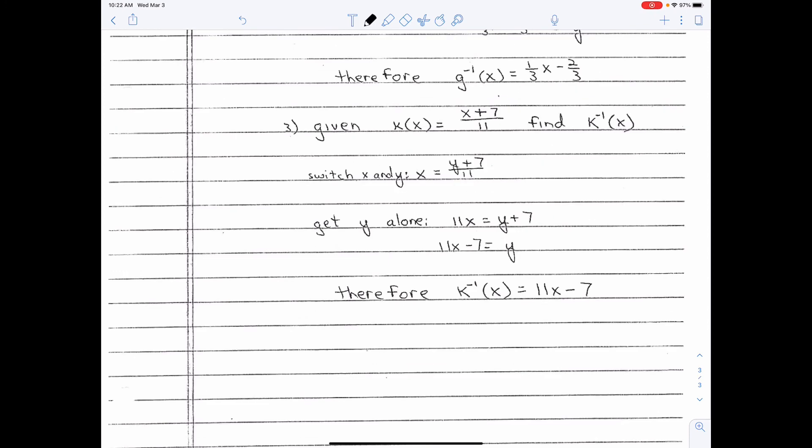So, given g(x) equals x plus 7 all over 11, find g to the negative one of x. You switch the x and y. Again, remembering that the g(x), that refers to the y. You get y alone, and then write the equation. g to the negative one of x equals 11x minus 7.